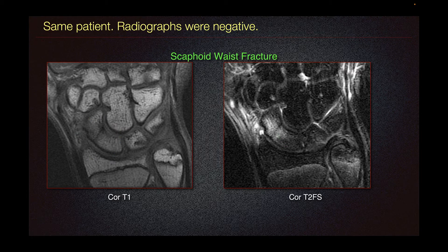CT has been used in the acute setting when a fracture is radiographically visible or for surgical planning. However, if there is an option between CT or MRI, MRI is favored as the second test of assessment for radiographically occult scaphoid fractures.